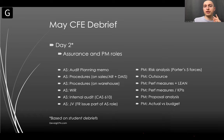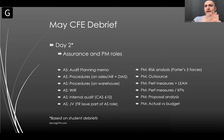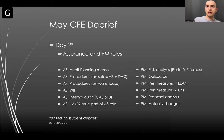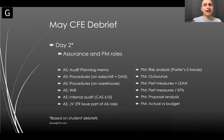For the PM role, we had a risk analysis using Porter's Five Forces, an outsourcing question, performance measures and lean management tied into one AO, another performance measures question using KPIs, a proposal analysis, and a variance between actual versus budget. Those are the high-level AOs for PM. Those questions are not particularly shabby — pretty straightforward questions overall. I don't think they were too complex.